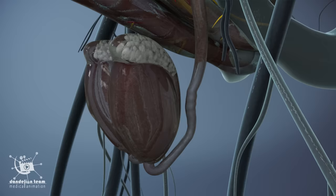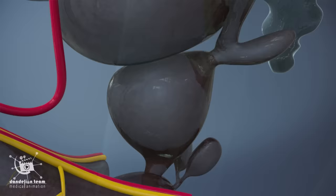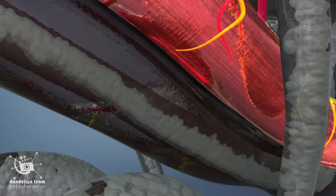Then the vas deferens contract to squeeze the sperm toward the base of the penis. The prostate gland and seminal vesicles release secretions to make semen. At this stage, the ejaculation is unstoppable.